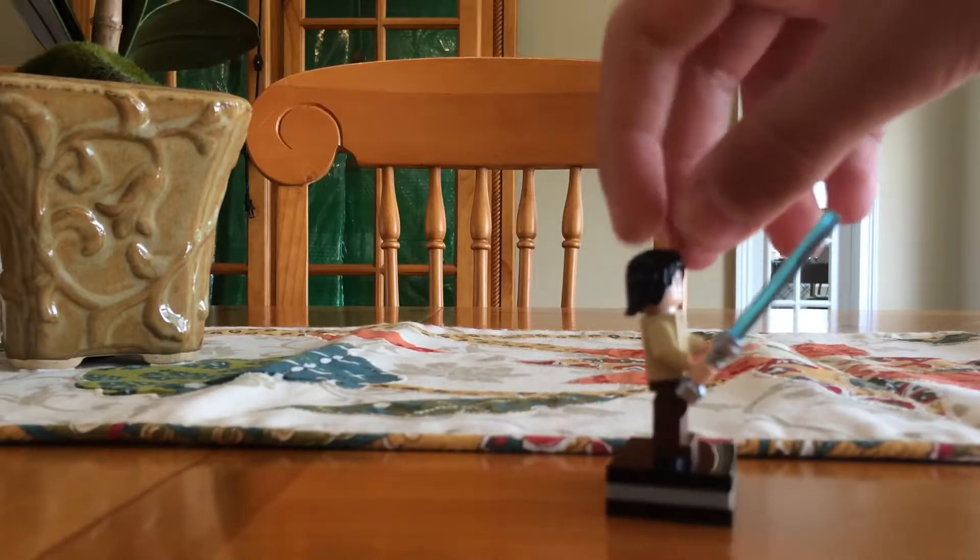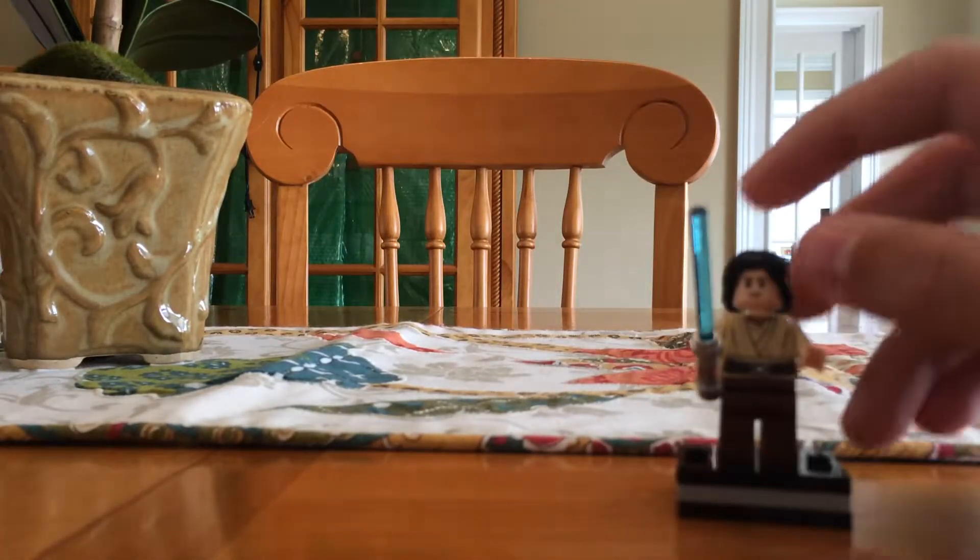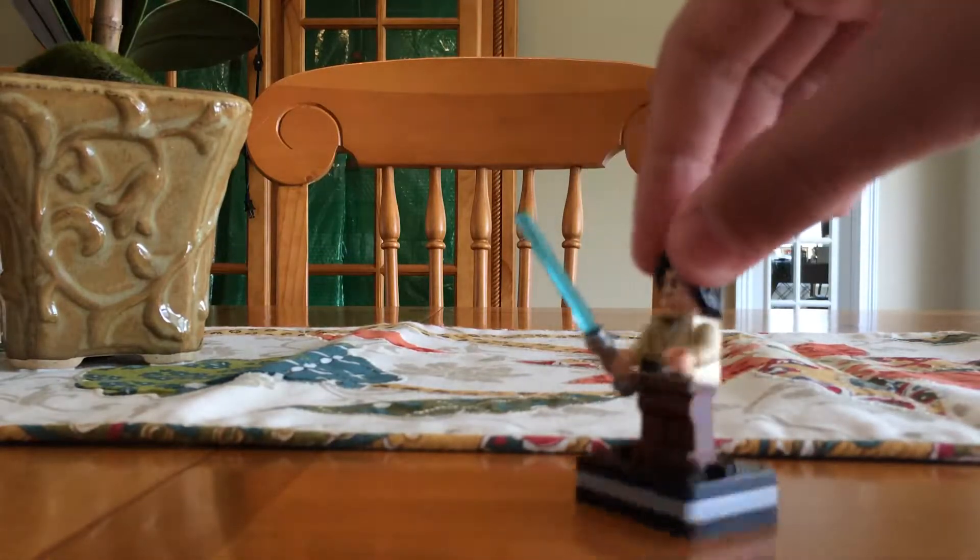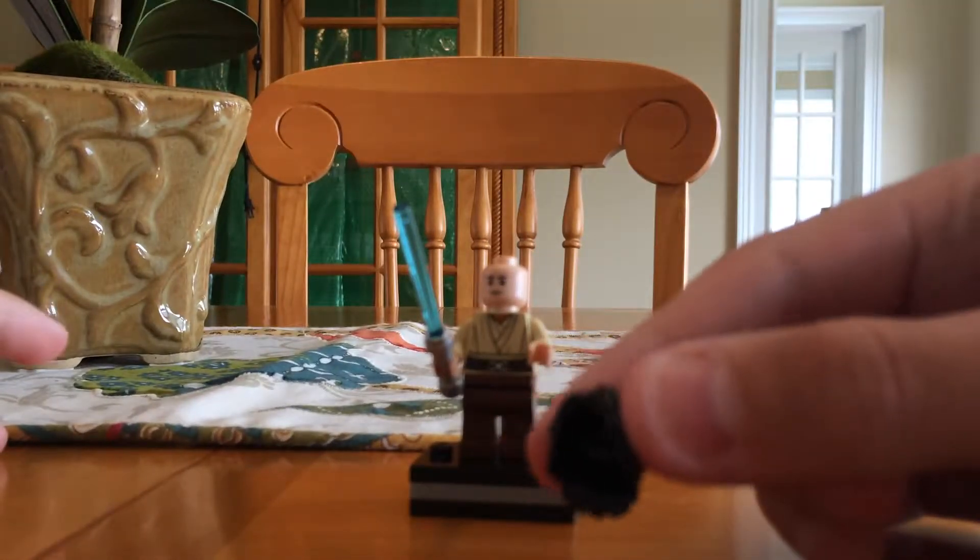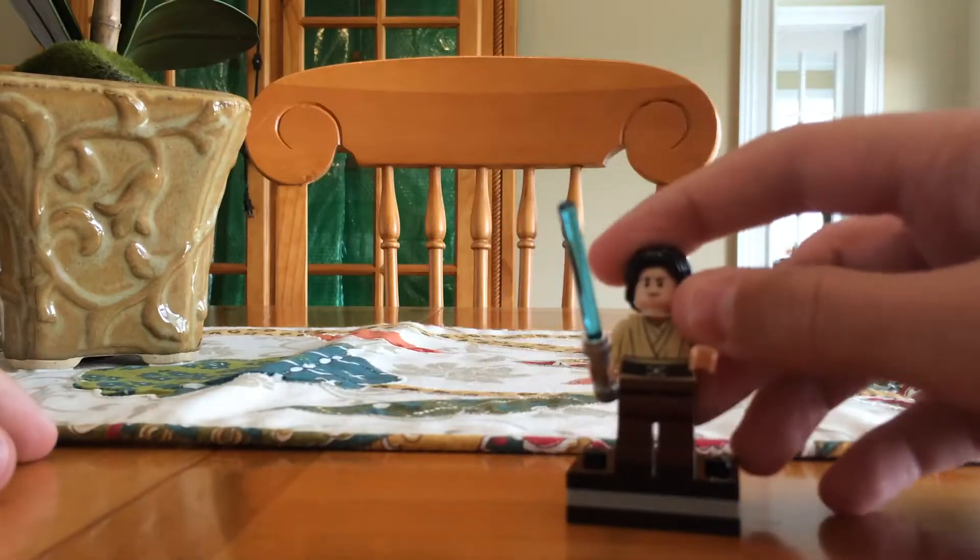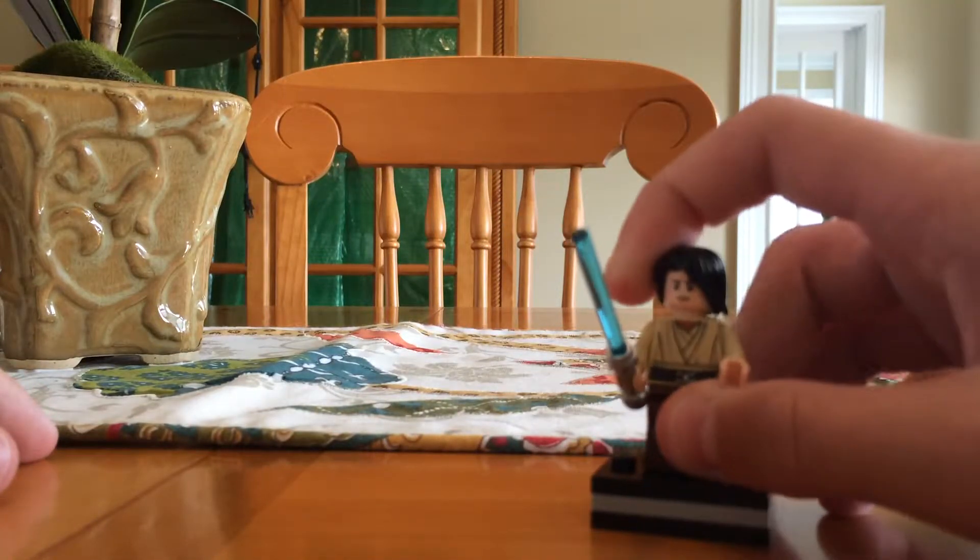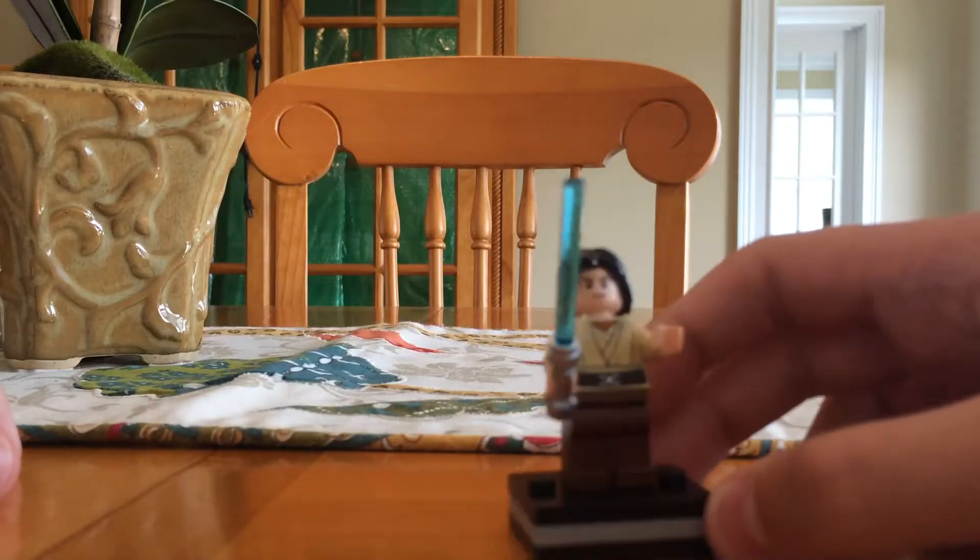So the body, the torso and the legs are from Qui-Gon Jinn's minifigure. This little hair piece is the one you get in the 2016 and 2017 Lego sets for Kylo Ren. I got this off of Baze Malbus's hair piece.